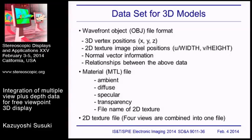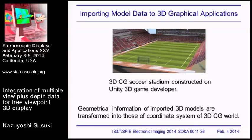The second file is the material file, which may include ambient, diffuse, specular, and transparency information, as well as the filename of the 2D texture. This texture file is a single file because the four views are combined into one. As a final step, the reconstructed 3D model is imported to 3D graphical applications. This image shows a 3D CG soccer stadium constructed in Unity 3D game engine.